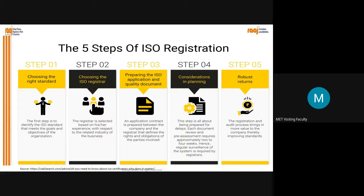Step four: be prepared for delays. Each document review and pre-assessment requires approximately two to four weeks, hence regular surveillance of the system is required by the registrar. Once you submit the application, the notified body comes to evaluate all your documents and processes during their Stage 1 audit. They give non-conformities which may be minor or major, and you have approximately six weeks to come up with solutions. Once you close all non-conformities, you call for the Stage 2 audit. After Stage 2 audit, they see how you have implemented corrections and closed all NCs - only then will you get the certification.